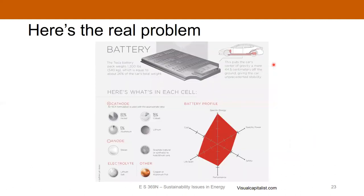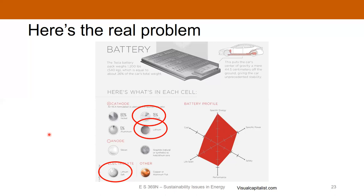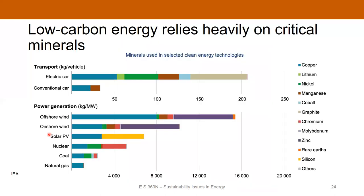Now the battery: there is a carbon footprint associated with it. The typical Tesla battery weighs 1,200 pounds and contains, among other things, cobalt, lithium, lithium salt as the electrolyte, and nickel. It's a good battery — gives you good range and is easy to charge — but it contains some funky components. Low-carbon energy relies heavily on what we call critical minerals: things like copper, lithium, nickel, etc. An electric car compared to a conventional car has many, many more of these critical minerals. The same is true for renewable energy compared to fossil energy — the equipment used to generate that energy uses a lot more of these critical minerals.